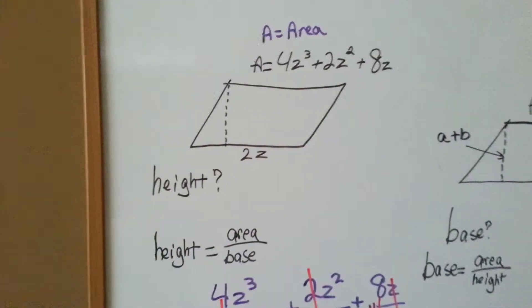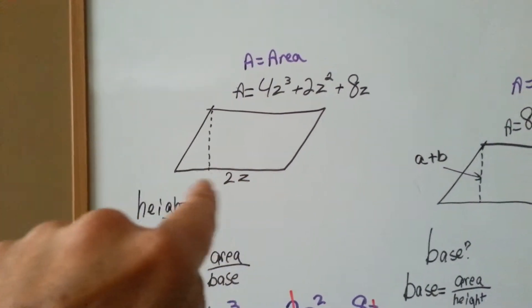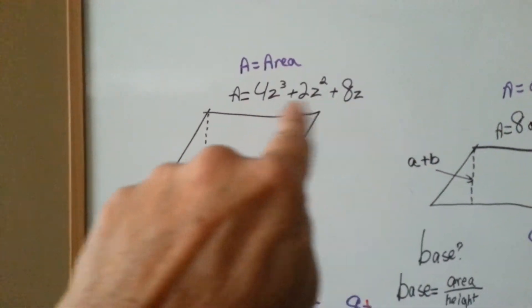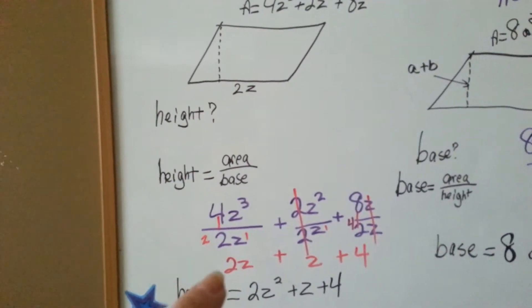Okay, let's look at this one. We need to find the height. We know that this side of it is 2z, and we know this is the area. So, we're going to split this into three parts again. We're going to divide it by the 2z.